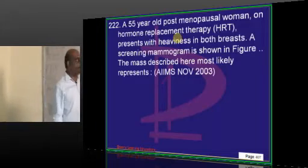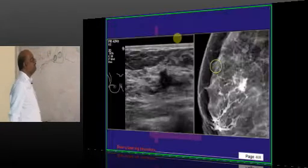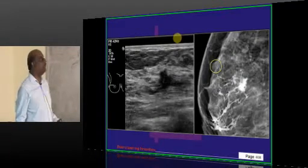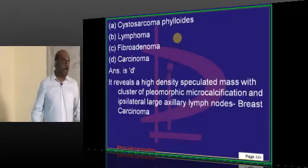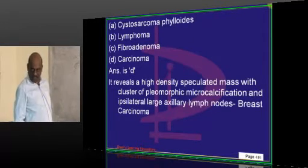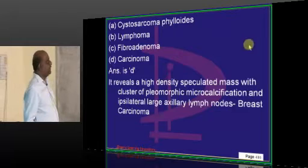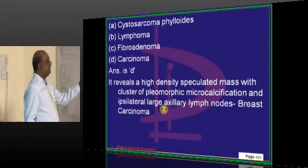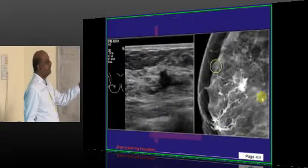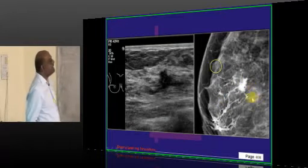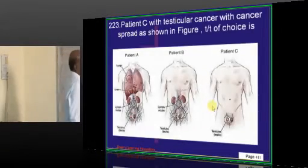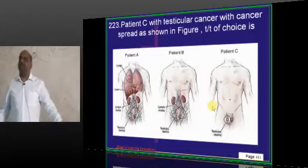55 year old postmenopausal women on hormone replacement therapy and a screening mammogram has been done. What is this mass most likely to represent? It is a carcinoma. How do you recognize? Highly dense, high density, speculated mass with cluster of pleomorphic calcifications is the classical description of malignancy.